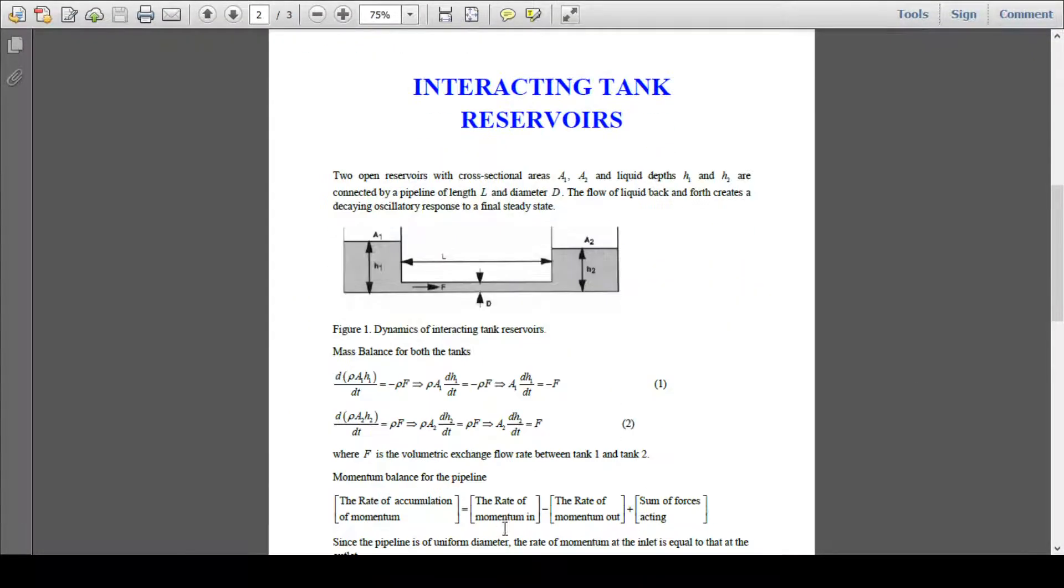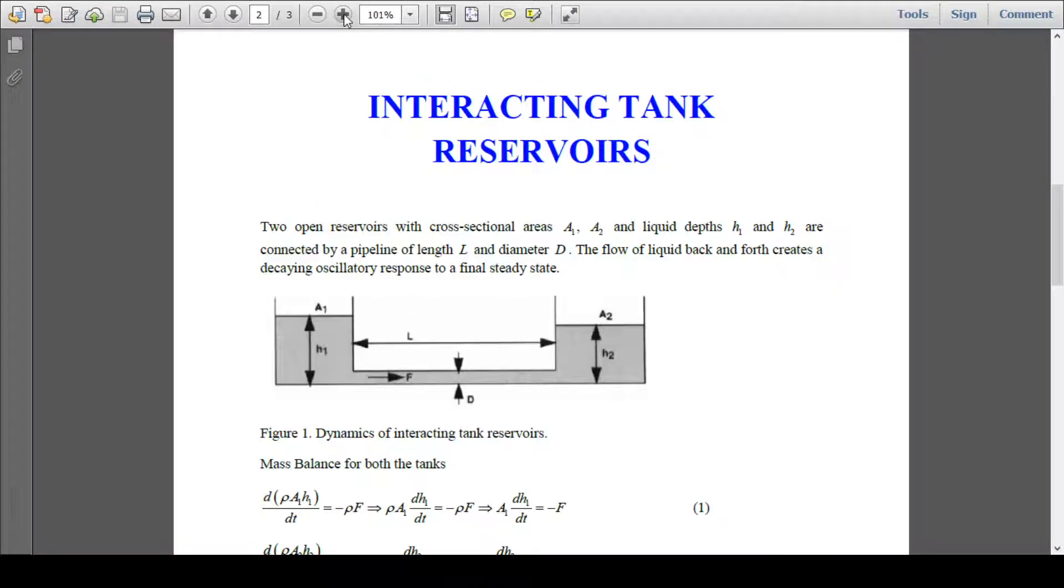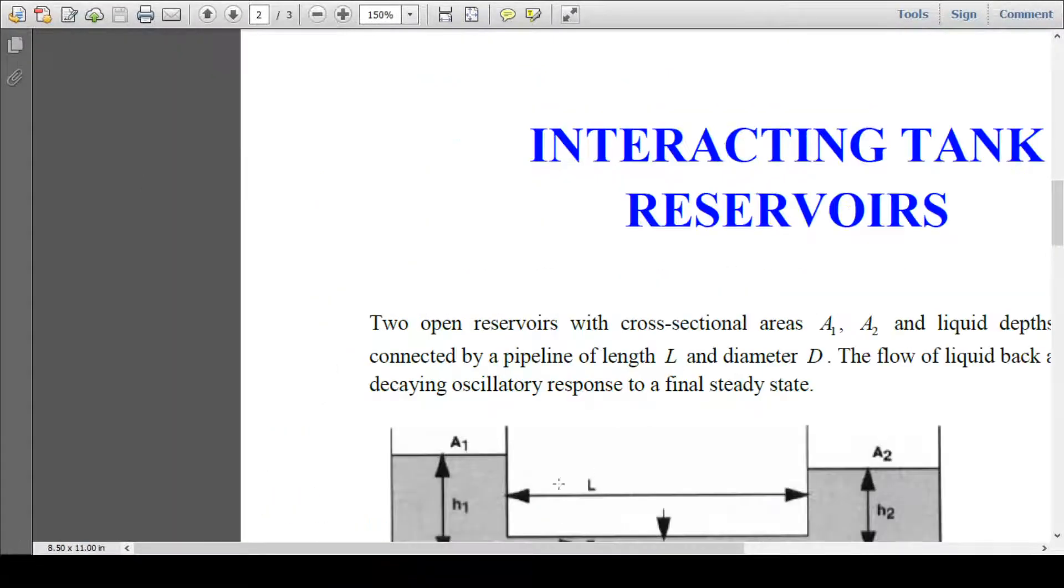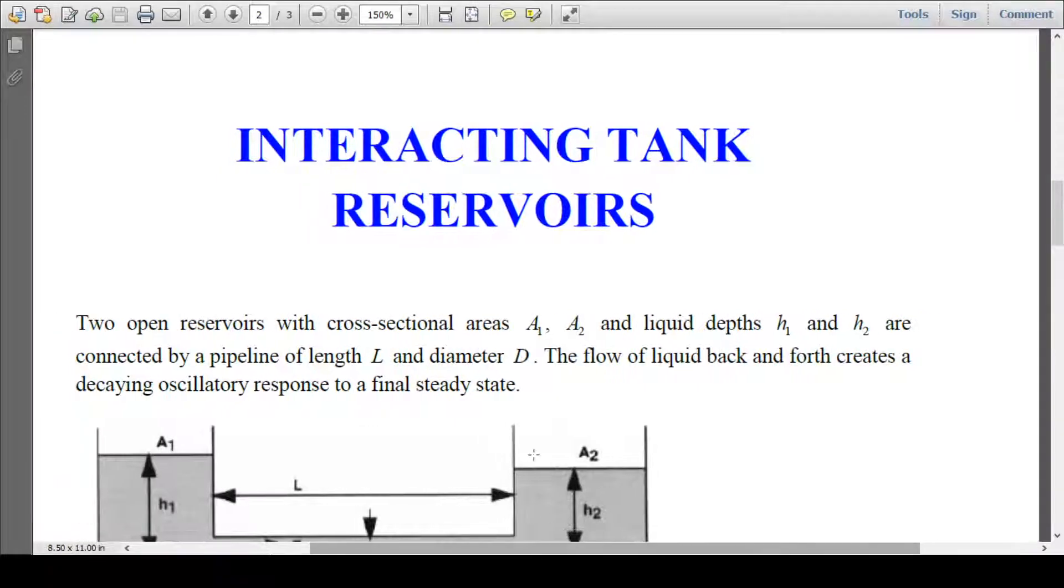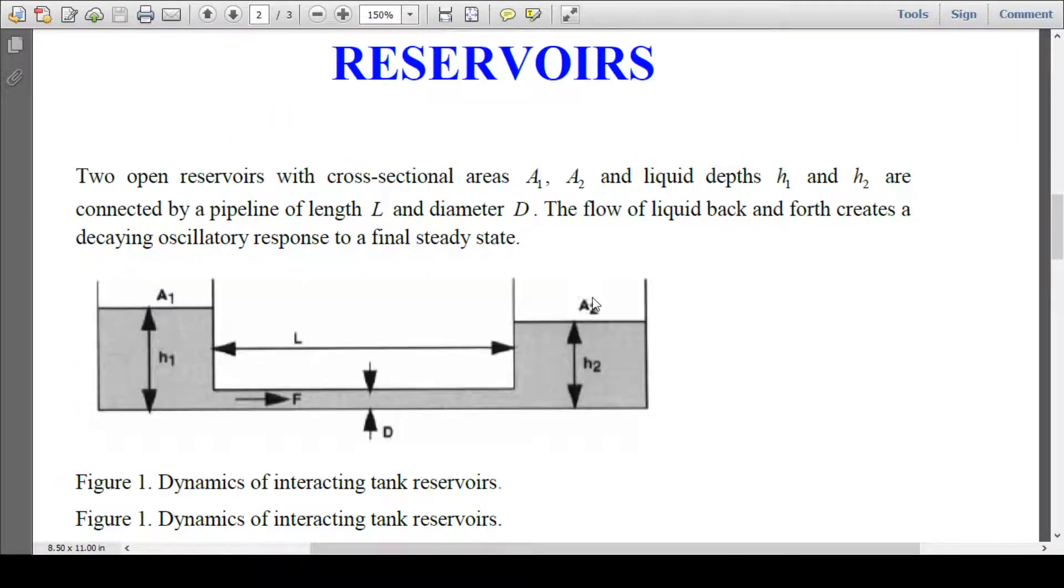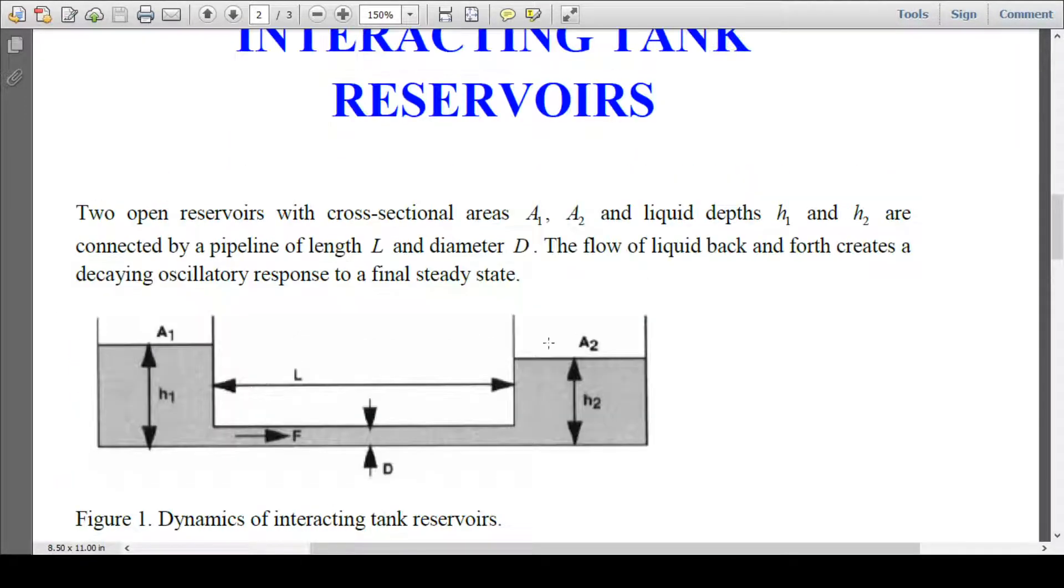If you see, this is the case which we are considering here. We have interacting tank reservoirs, two open reservoirs with cross-section area A1 and A2. Liquid depths are H1 and H2. They are connected by a pipeline of length L, diameter D. Liquid flow back and forth creates an oscillatory response in final steady state.